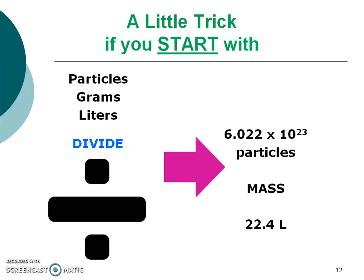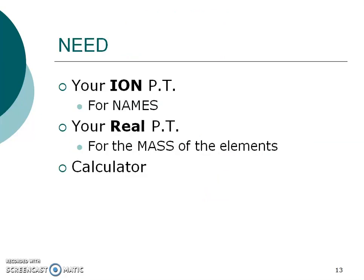Again: Avogadro's number, the mass, or the 22.4 liters. You might want to jot this down in your margins as a checkpoint — if I'm starting at the mole unit, I better be multiplying my value. Pause the video, make sure you have your ion periodic table for names and formulas, your real periodic table for the masses, and of course your calculator because you're going to be doing some math.